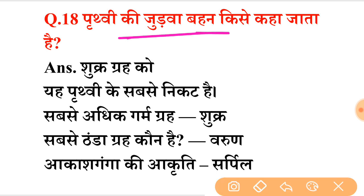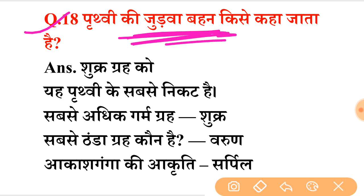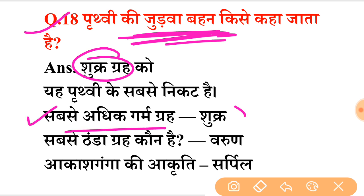Which planet is called Earth's twin sister? This question has come up many times in live classes. The answer is Venus. Venus is called Earth's twin because it is nearly equal in size to Earth and is the closest planet to Earth.